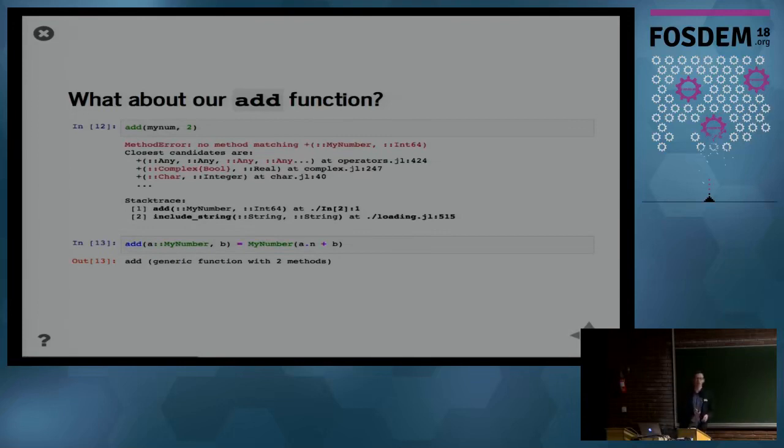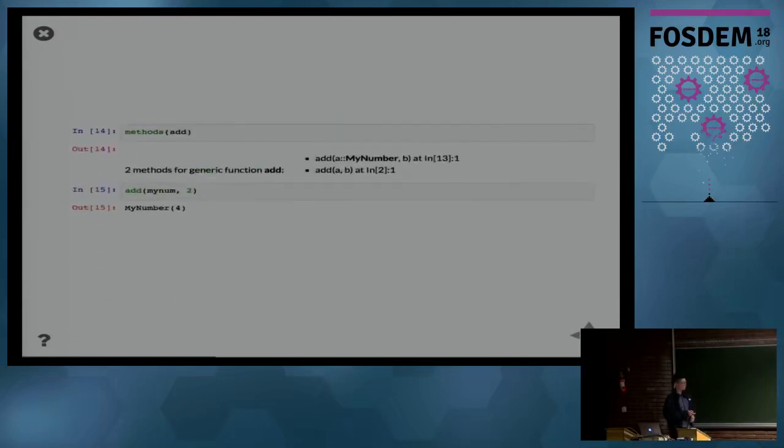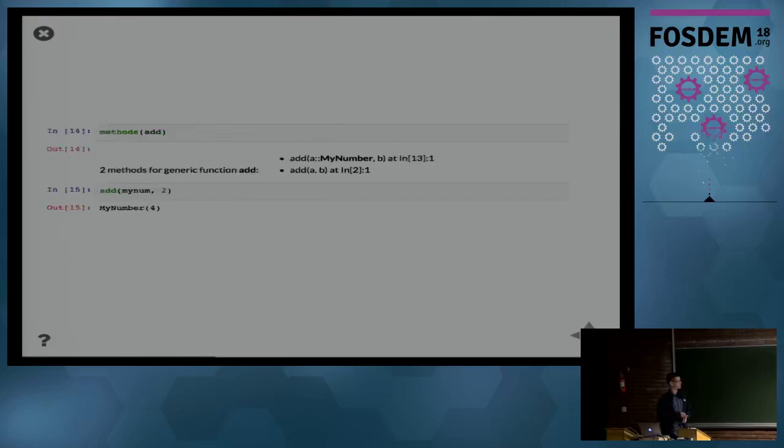You can annotate the function add, create a new version that takes a as a MyNumber and b can be anything, and then implement this to return a MyNumber. We see now after executing this that there's now an add function but it has two methods. You might wonder which are those methods. For that we have the methods call. We can see that now we have the two add functions, the one we first defined and the specialization. Now if I call it with the MyNumber, it will call the specialized function and return the correct value. This way it's very easy to build a complex system using your own types and overriding the necessary functions. That makes for a very flexible code in the end.